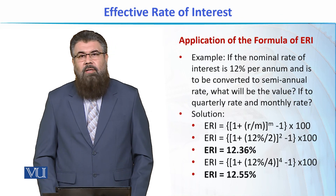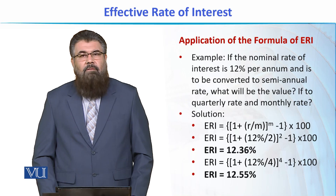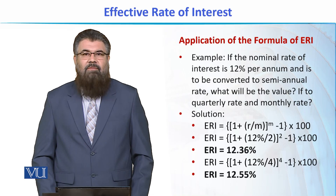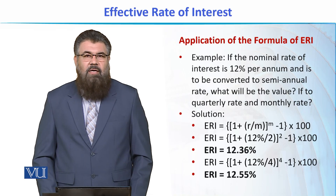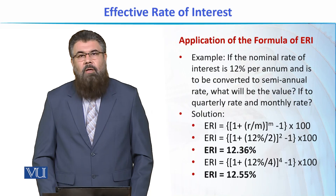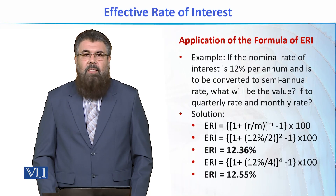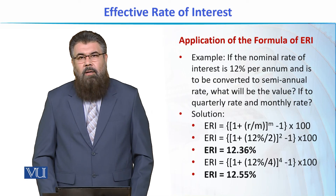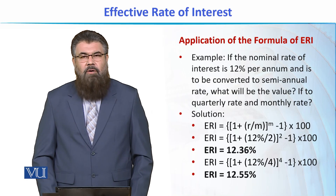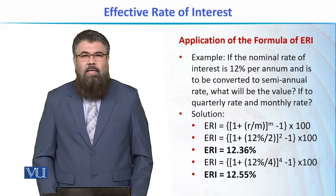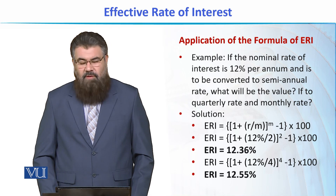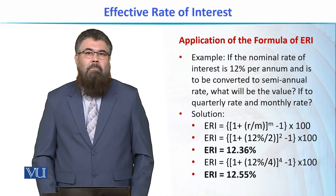So the same nominal rate of 12%, when applied on a semi-annual basis, becomes effectively 12.36%, and when applied on a quarterly basis, it becomes 12.55%. If we keep reducing the compounding period — making it monthly or daily — the effective rate of interest will keep increasing further.